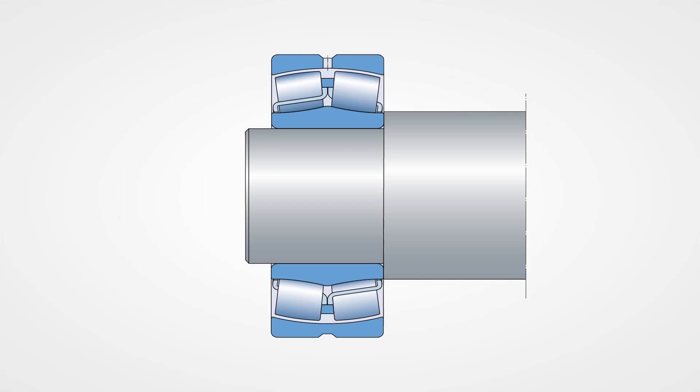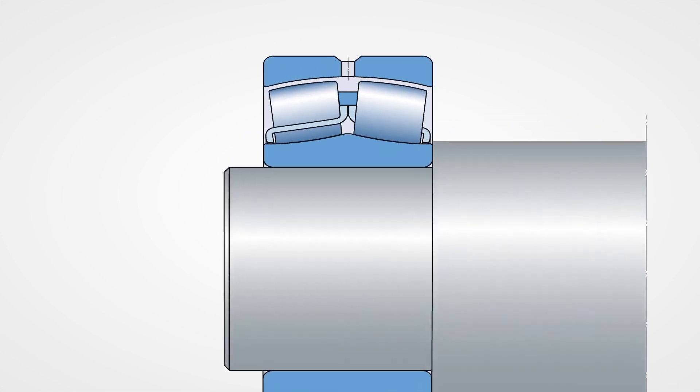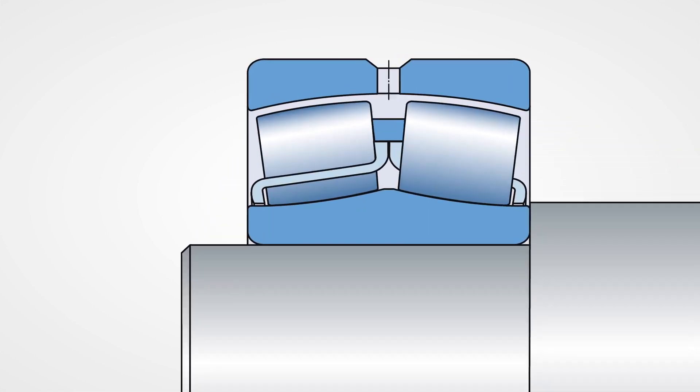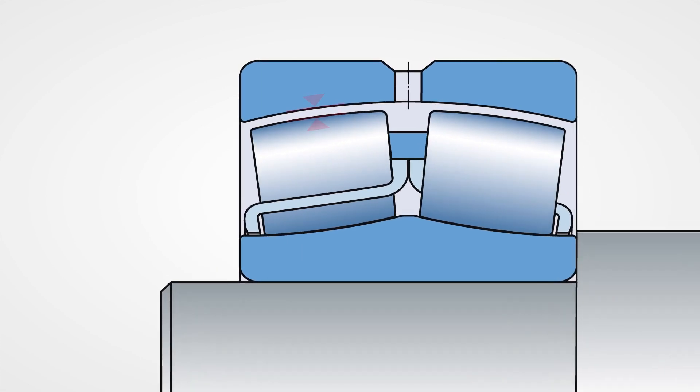Spherical roller bearings with a cylindrical bore are supplied with a predetermined amount of radial internal clearance. When the bearing is mounted with an interference fit, this clearance will be reduced. Make sure when replacing bearings that the new bearing has the same radial clearance as the one being replaced, for example, C3 or C4.